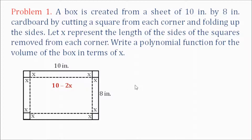How about the width? We do the same thing. It becomes 8 minus 2x. The 8 is the length of that side, and we cut a square with length x on one corner and also a square with length x on the other corner. So x here and x here — that's 2x. So 8 minus 2x.